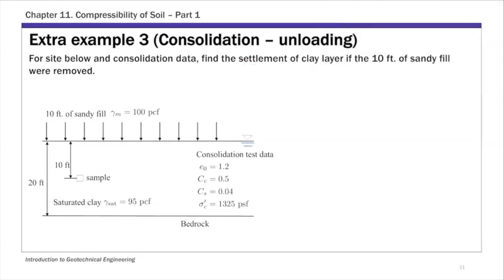This is extra example three of chapter 11. In this example we're going to calculate the rebound of the clay layer if we remove the sandy fill on top. We already have 10 feet of sandy fill on top, and we're going to calculate the expected rebound of the clay layer if that layer were to be removed.